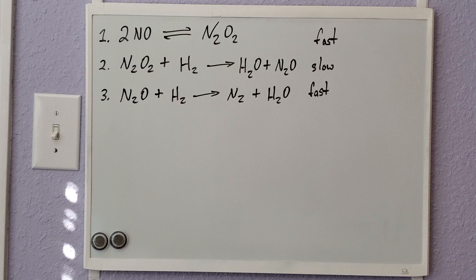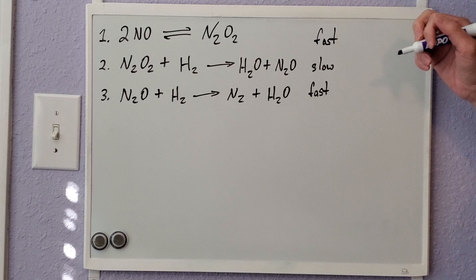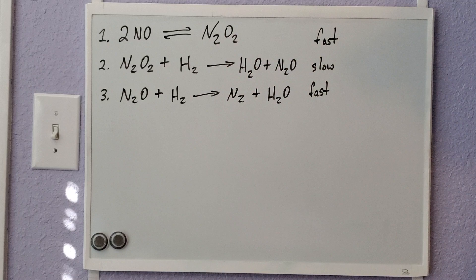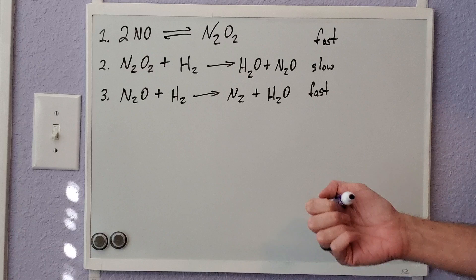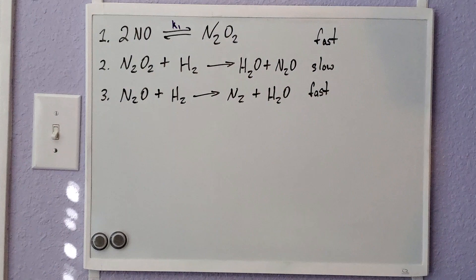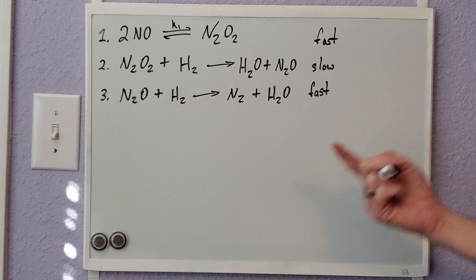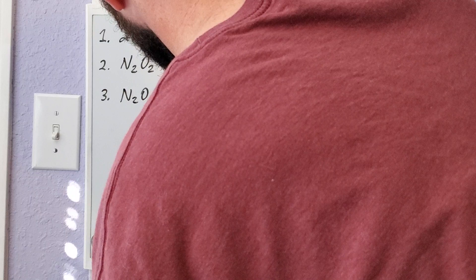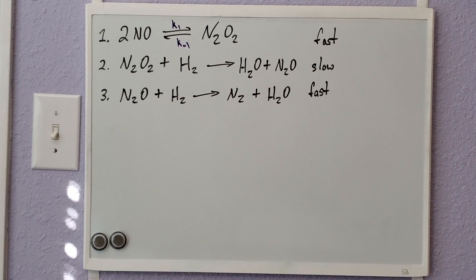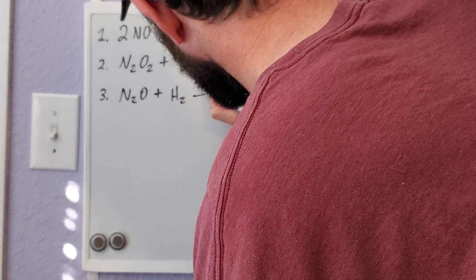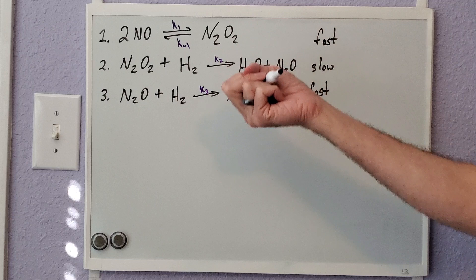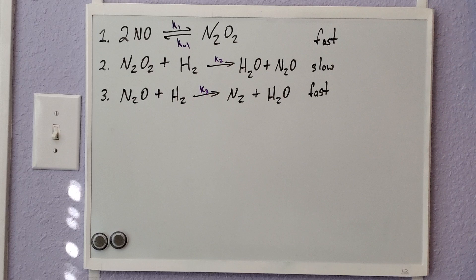Looking at each individual elementary step, we can determine their rates. For the first reversible reaction, the forward direction is assigned rate constant K1, and the reverse direction K-1. The second step gets K2 and the third gets K3. Notice there are no negative K values for K2 and K3 because those reactions go in only one direction — they are non-reversible.